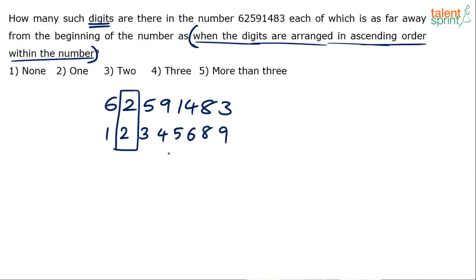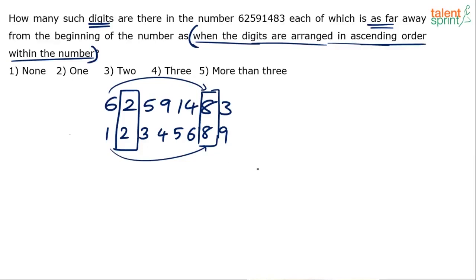So 2 is in the same position in both numbers. Similarly, 8 is in the same position in both numbers. The digit 2 is in second position in the original number and also in second position in the ascending order number. If you look at digit 8, it is in seventh position in the original number and also seventh position in the ascending order number. So only 2 and 8 are the two digits which are in the same position.